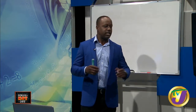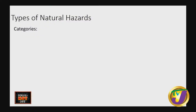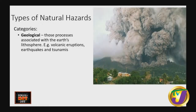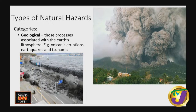Now let's look at what natural hazards are and differentiate hazard versus disaster. Natural hazards can be geological, hydro-meteorological, or biological - they exist naturally in nature. Geological hazards relate to the earth and include volcanic eruptions, earthquakes, and tsunamis. When there's an earthquake under the sea, we have the potential for a tsunami.